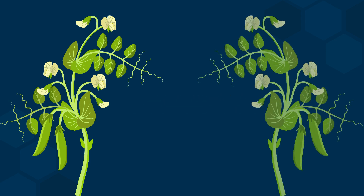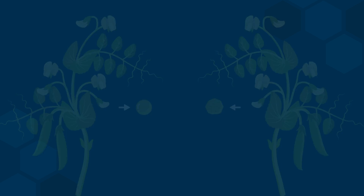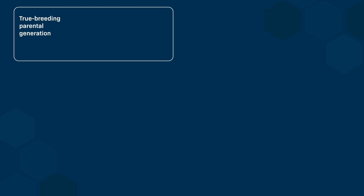Let's look at a very simple experiment that Mendel did with these pea plants. Mendel studied a trait related to the shape of peas, and found that peas produced by certain plants could either be smooth or wrinkled. The experiment began with true breeding parents. One of the parents had smooth peas, indicating that both alleles must be identical, denoted as two uppercase R's.